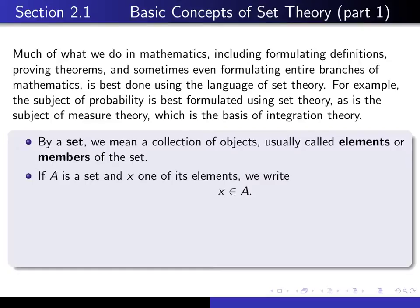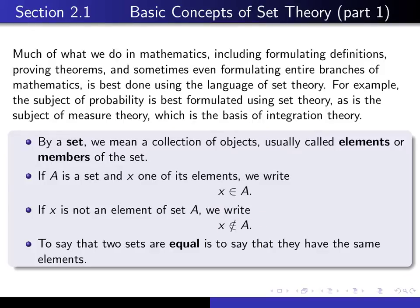If A is a set, then in order to indicate that x is one of its elements, we use this notation here. And to indicate that x is not an element of a set, we use this notation. Equality of sets is defined in this way: since a set is made up of elements, we say that two sets are equal if they have exactly the same elements.